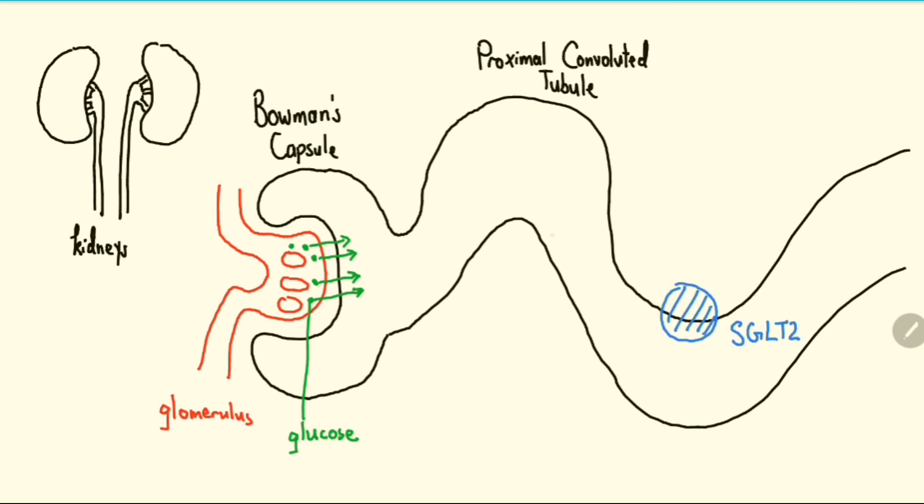SGLT2 is a protein in the proximal convoluted tubule that acts to reabsorb filtered glucose back into the blood. Approximately 97% of filtered glucose is reabsorbed into the body through SGLT2.